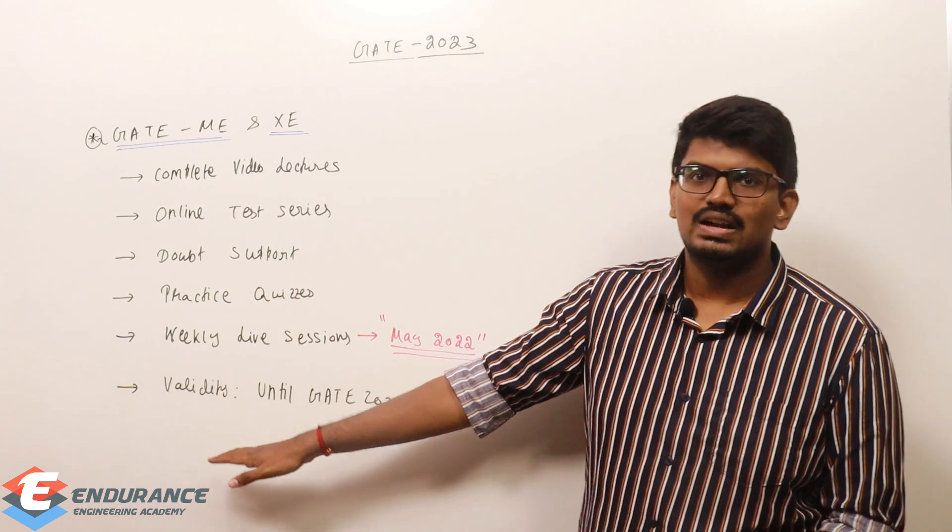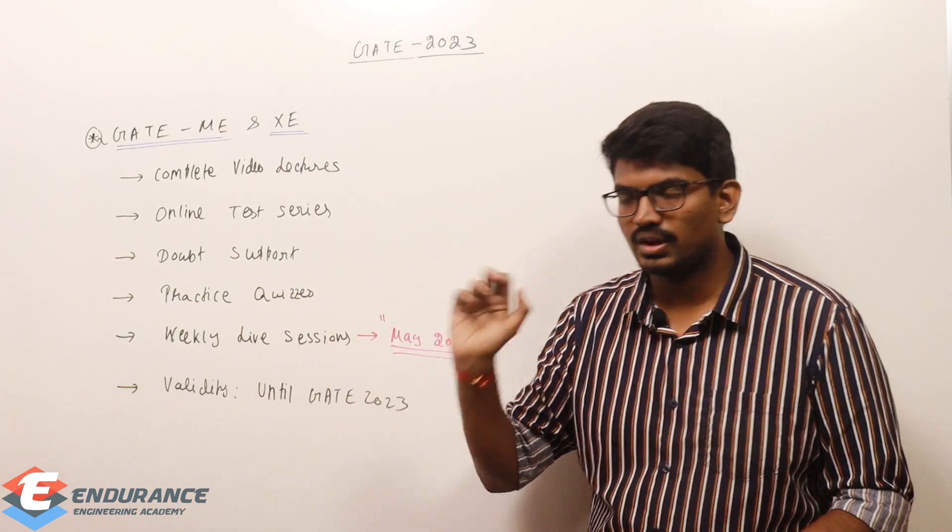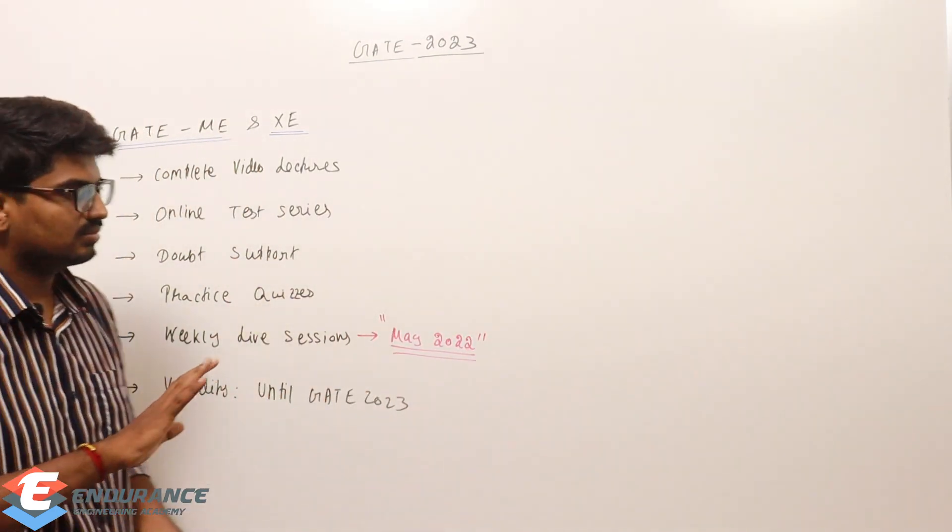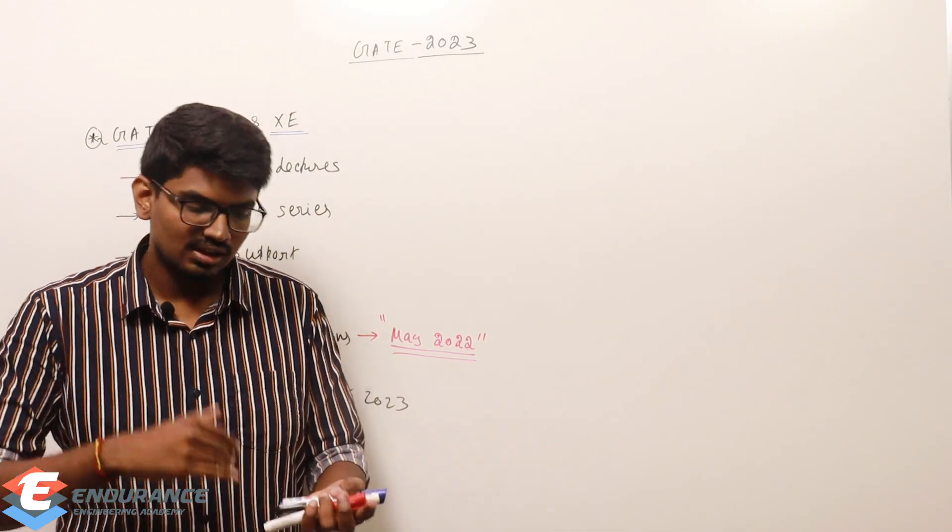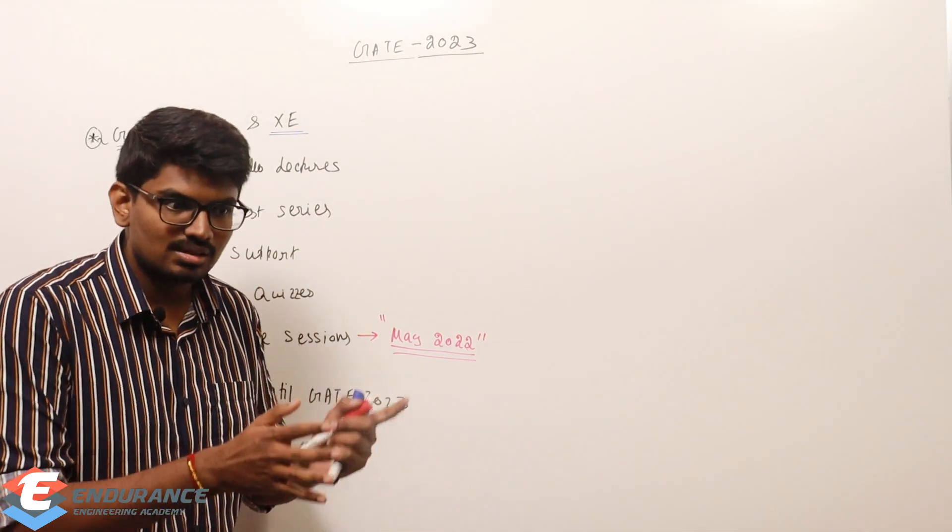And now, coming to last, Validity. Until GATE 2023, so approximately 14 to 15 months validity. And finally, before concluding, overall, in the video, this is the GATE 2023 pre-registration video. Pre-registration means November and December when you can register it.